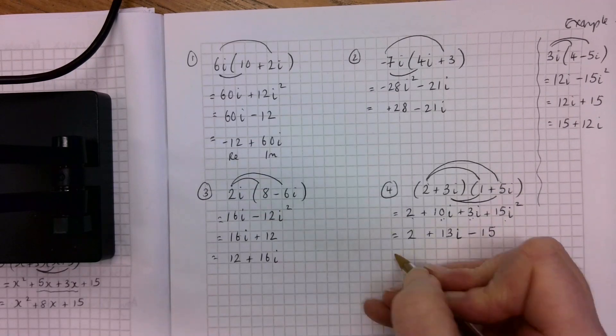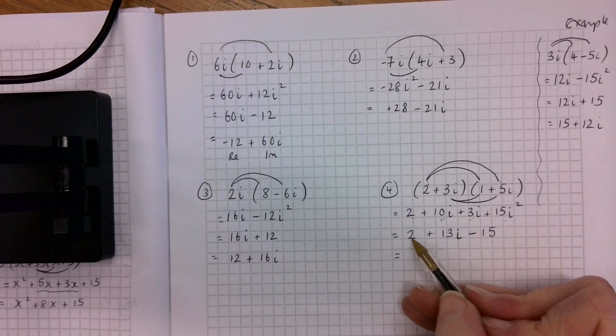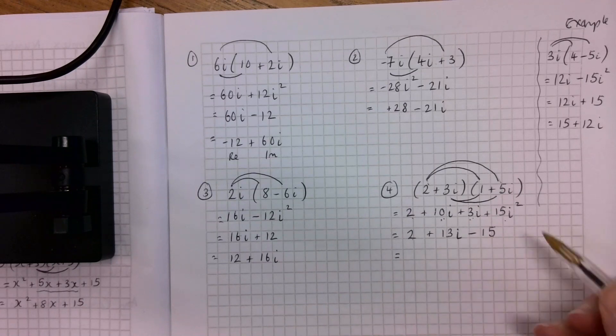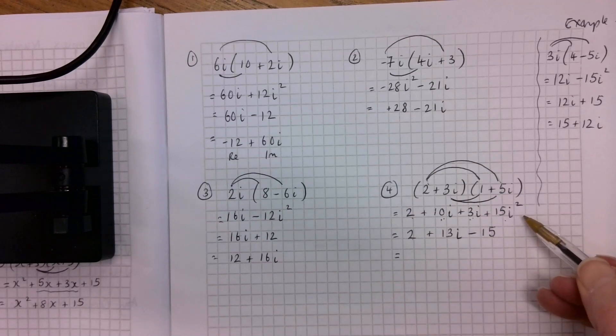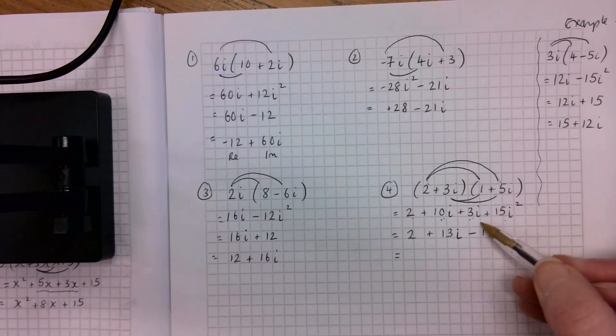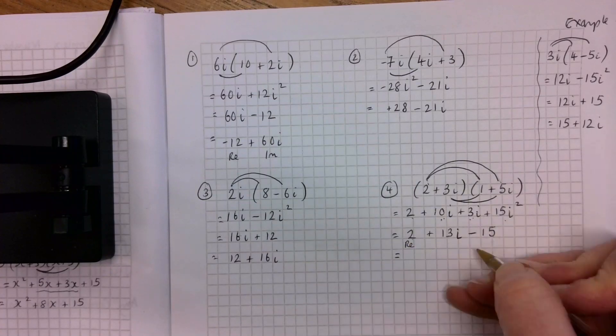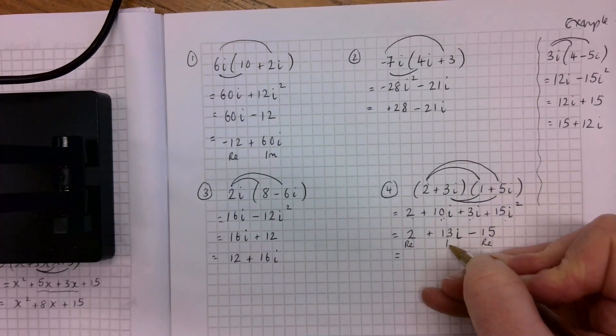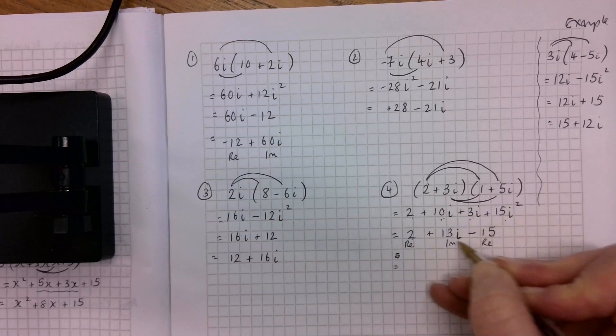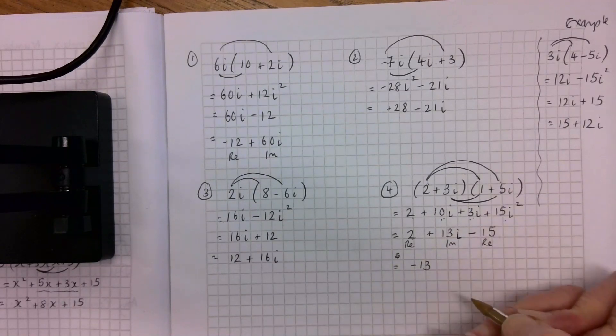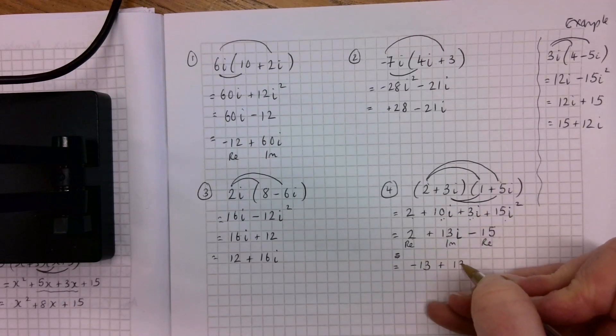And now to finish up, I'm going to put my numbers, my real numbers. Because this one, when it was i squared, it looked like an imaginary number. But once I deal with the i squared and make that minus 1, it becomes a real number. That's kind of a bit confusing, I think. So that's real now. And that's real. And that's imaginary. So I can have 2 minus 15 is minus 13 plus 13i.